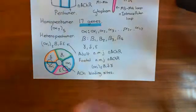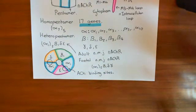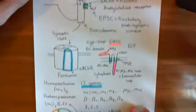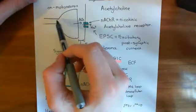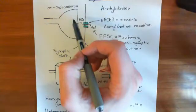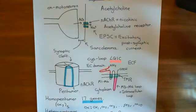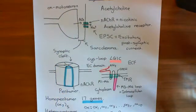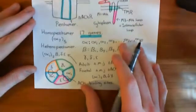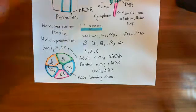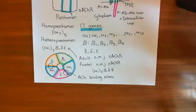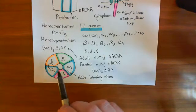Let's summarise the neuromuscular junction. The alpha motor neuron fires an action potential, which travels down the axon to the axon terminal and triggers exocytosis of the neurotransmitter acetylcholine into the cleft between the presynaptic membrane and the sarcolemma of the skeletal myocyte. The acetylcholine diffuses across the cleft and binds to the alpha-1₂, beta-1, delta-epsilon nicotinic acetylcholine receptors. Two acetylcholines bind to each receptor, causing a conformational change that opens the pore, and sodium ions can then move through the receptor.